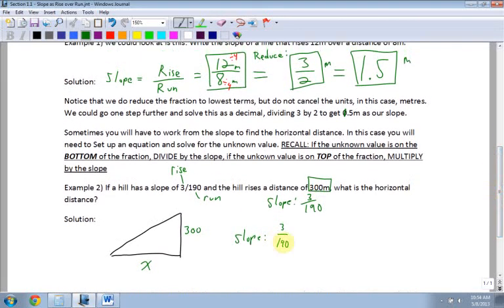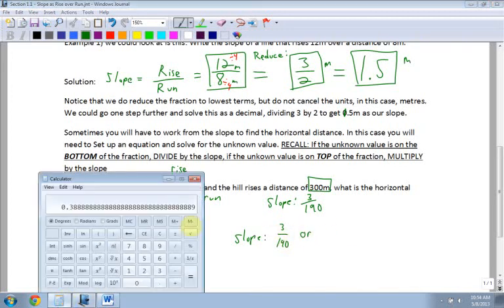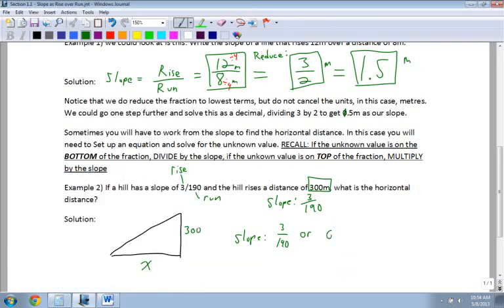So when I work out this example, I have 3 over 190, or I convert that to a decimal. So I take 3 divided by 190, which is 0.016. And now what I do is I say, okay, now what's my rise over my run? My rise is 300 over my run, which I don't know, which is x. Remember, rise is vertical. Run is horizontal.